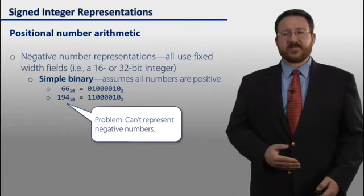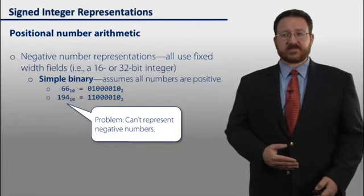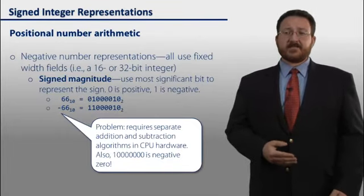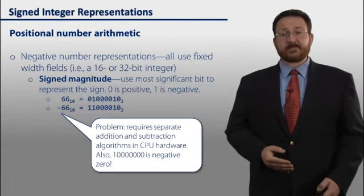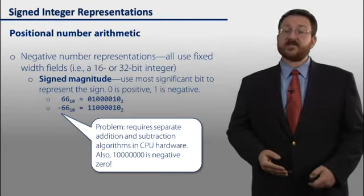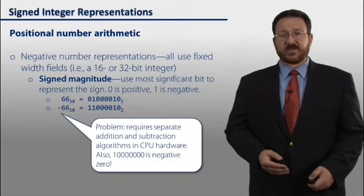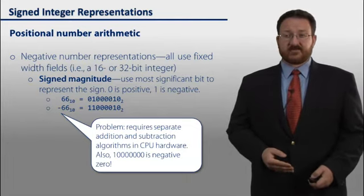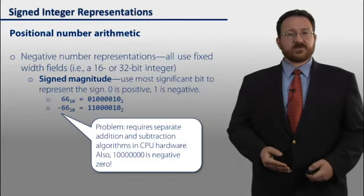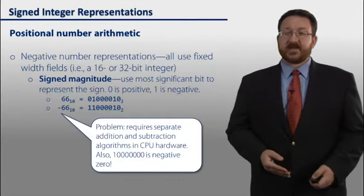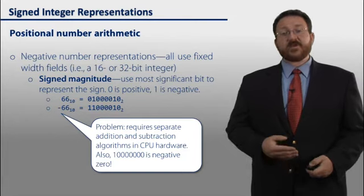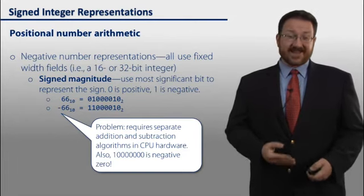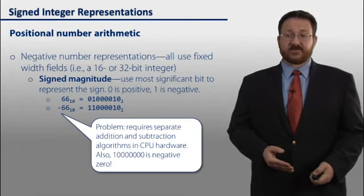And so, one way of fixing this problem is to use a signed magnitude representation. In a signed magnitude representation, we use that most significant bit to encode whether or not the number is positive or negative. A 0 represents a positive number, and a 1 represents a negative number. So notice that these two numbers, just like on the previous slide, only differ in that most significant bit. But we interpret the second number as negative 66 instead of 192.